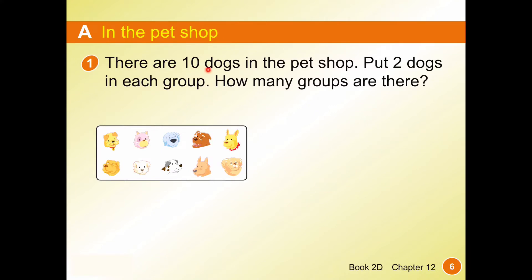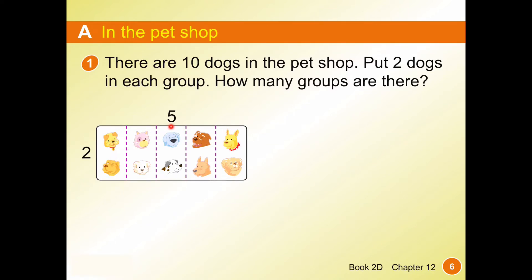Question 1: there are 10 dogs in the pet shop. Put 2 dogs in each group — how many groups are there? We know each group has 2 dogs and we want to find the number of groups. We separate the dogs with a dotted line, 2 dogs per group, and after separating we end up with 5 groups. Alternatively, you can circle 2 dogs at a time.